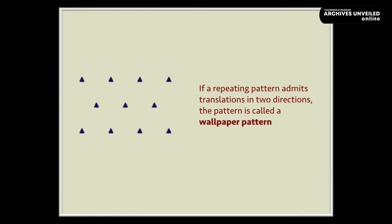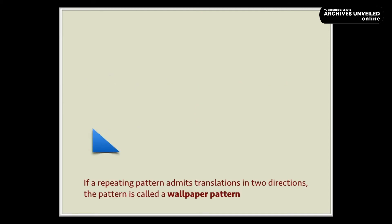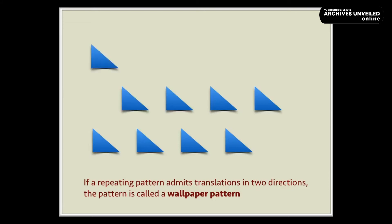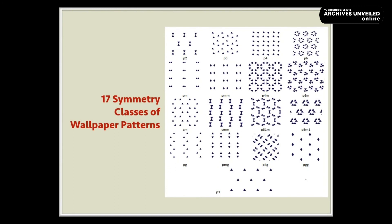If a repeating pattern admits translations in two directions, the pattern is called a wallpaper pattern. There is a total of 17 symmetry classes of wallpaper patterns known.